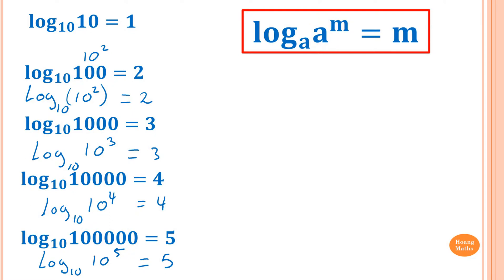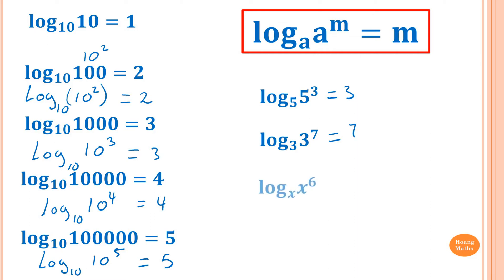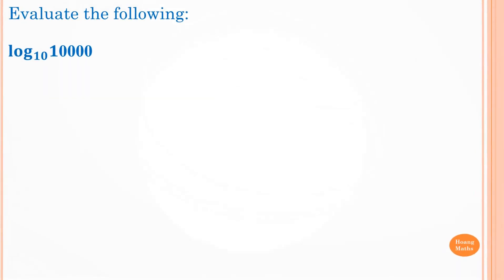For example, log base 5 of 5 to the power 3 should give me 3. And log base 3 of 3 to the power 7 should equal 7. Log base x of x to the power 6 equals 6. And log base n of n to the negative 8 equals negative 8.